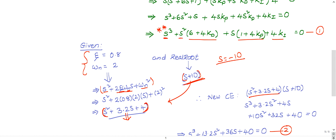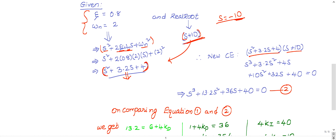Multiplying the second-order factor by the factor (s + 10) gives the full third-order characteristic polynomial. After expanding: (s² + 3.2s + 4)(s + 10) = s³ + 3.2s² + 4s + 10s² + 32s + 40, which simplifies to s³ + 13.2s² + 36s + 40.